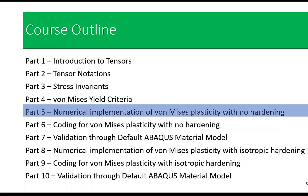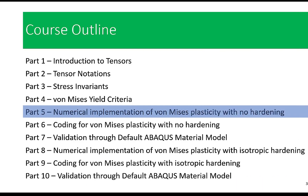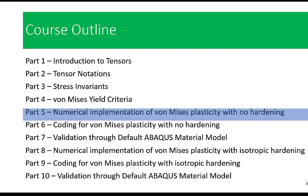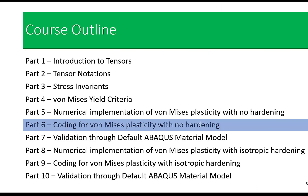Part five is where theory meets practice. We will demonstrate the numerical implementation of Von Mises plasticity with no hardening. We will get hands-on experience and see how this theory can be applied in real-life scenarios. In part six, we will take it a step further by diving into the coding of Von Mises plasticity, exploring the algorithms and steps involved.